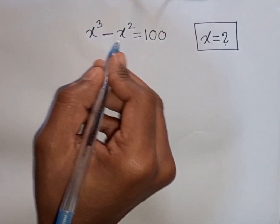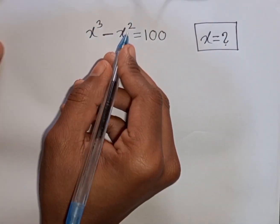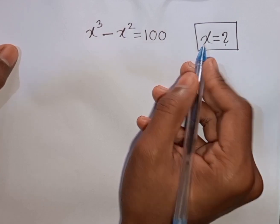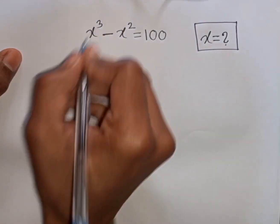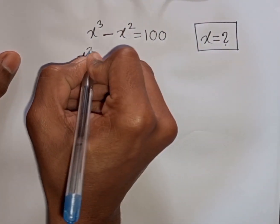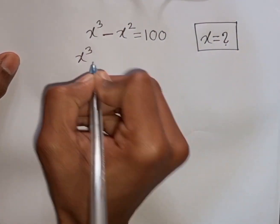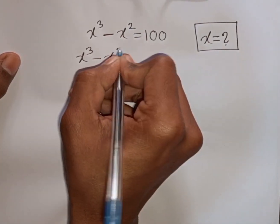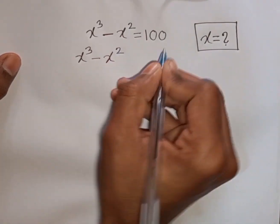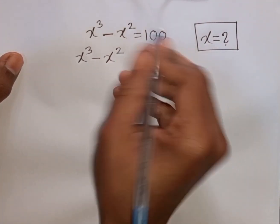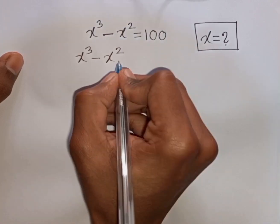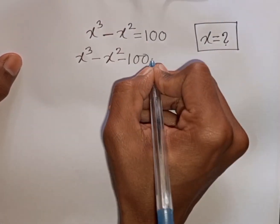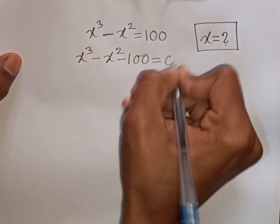x³ - x² = 100. Find the value of x. We have x³ minus x², and taking 100 to the left side gives us minus 100, so the equation becomes x³ - x² - 100 = 0.